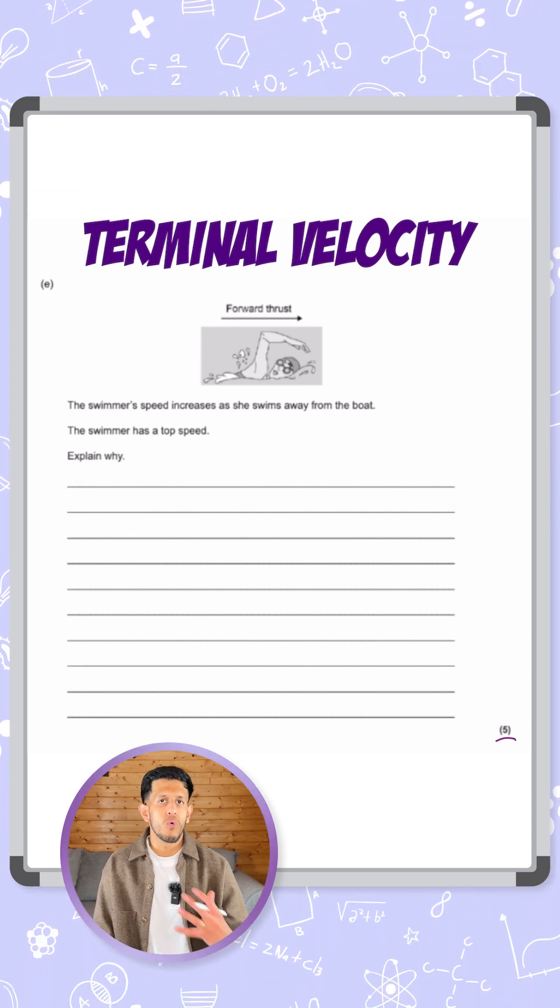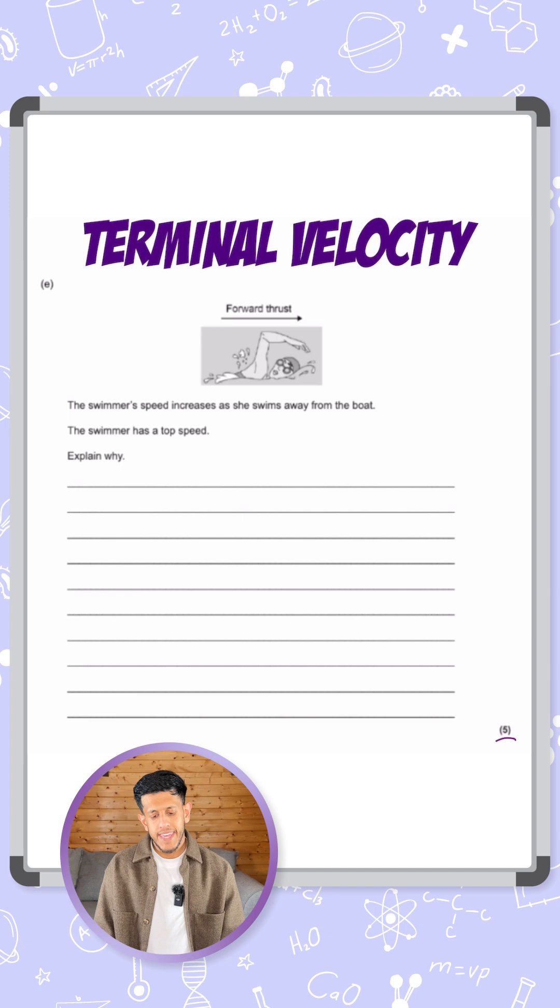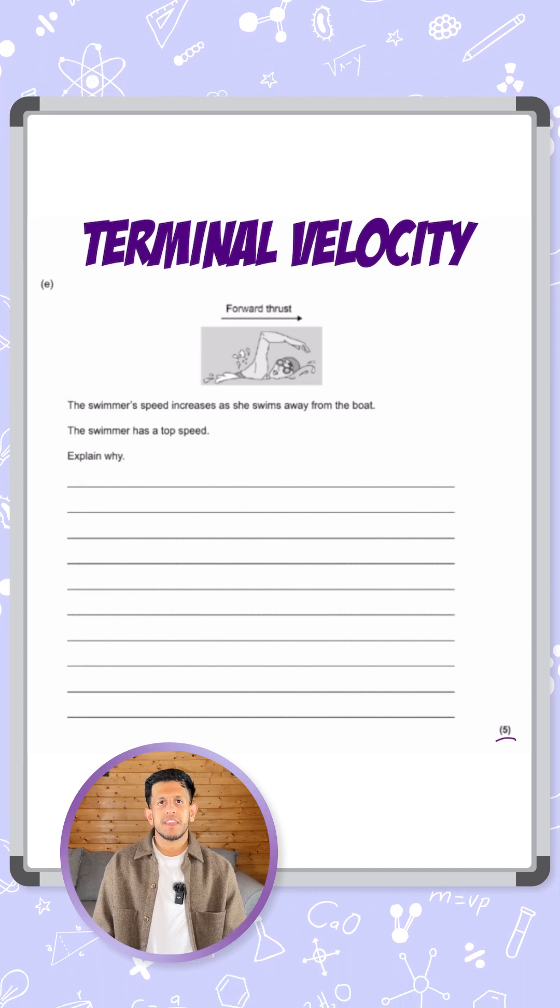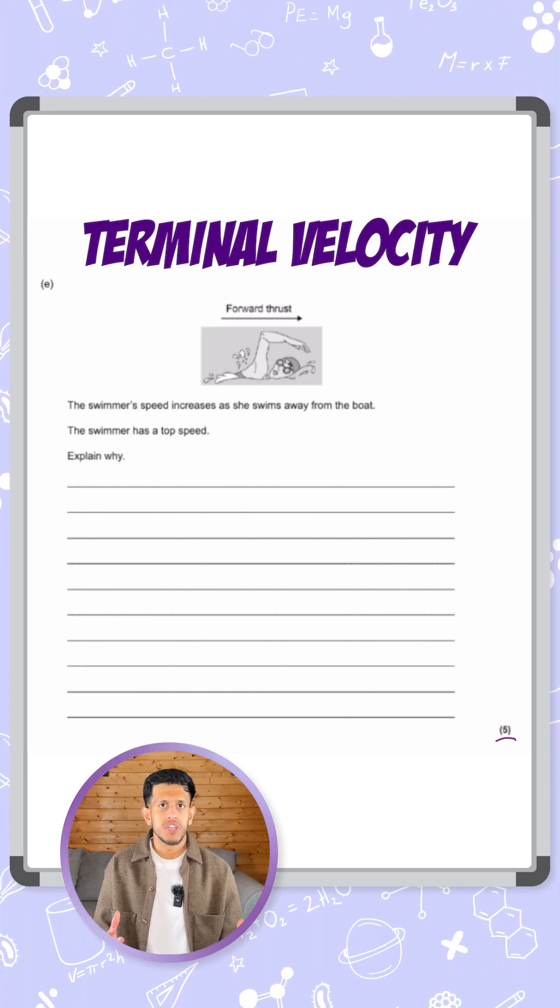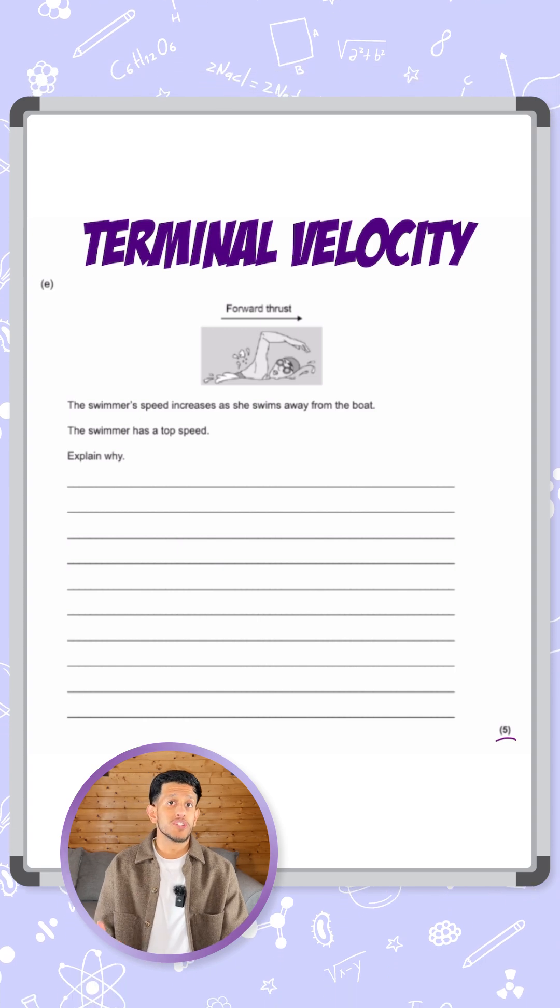So we need to think about the forces acting on the swimmer, and then how that is going to affect the motion and how the forces have changed throughout the motion, leading her eventually to reach a top speed.